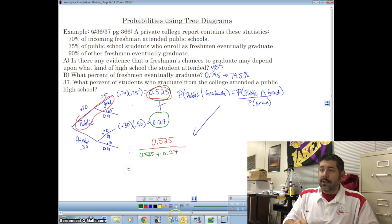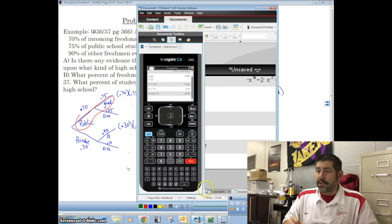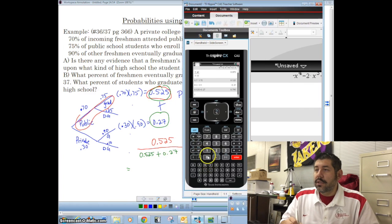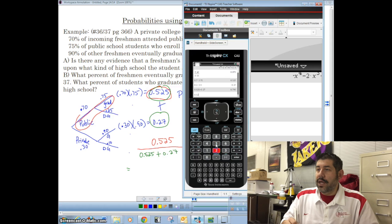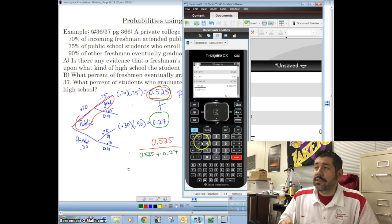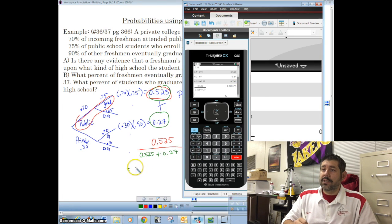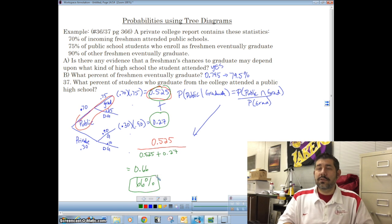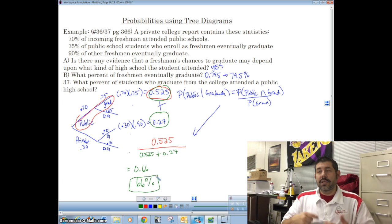We're just going to calculate that in our calculator. Let's go ahead and do that here. Let's go ahead and view it. I know this is probably getting behind me here, but I want to be able to see what I'm doing. 0.525 divided by parentheses 0.525 plus 0.27. Yes, you're probably saying, yeah, Mr. Mises, you could have just gotten the answer from B. And we get 0.660337. So we'll say 0.66, which we'll say is 66%. So 66% of students who graduate from college attended a public high school in this college.